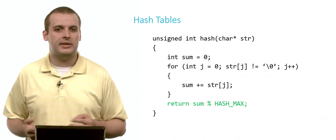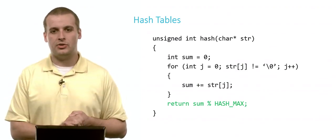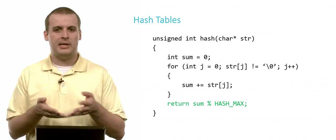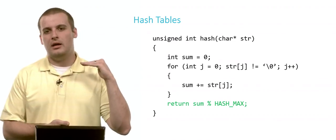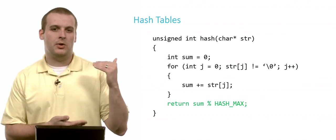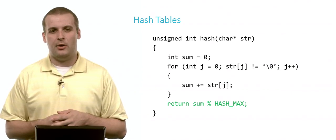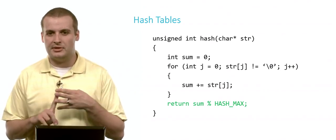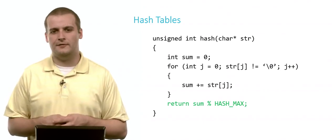And then I'm going to keep iterating through that string, adding strj to sum. And at the end of the day, I'm going to return sum mod hash max. Basically, all this hash function is doing is adding up all of the ASCII values of my string, and then it's returning some hash code modded by hash max, which is probably the size of my array. I don't want to be getting hash codes if my array is of size 10. I don't want to be getting out hash codes 11, 12, 13. I can't put things into those locations of the array.